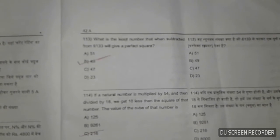Question 113: What is the least number that when subtracted from 6,133 will give a perfect square?